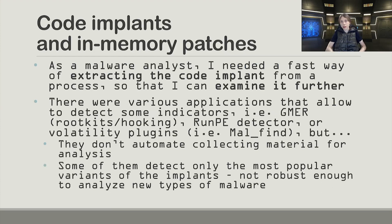As a malware analyst, I was most interested in those malicious implants. I needed a fast way of extracting code implants from a process so I could examine them further. There were various applications that allow detecting some indicators — for example, GMER detects rootkits and hooking, and there is also an app named PE Detector which detects RunPE, also known as process hollowing. There are also volatility plugins that work on memory dumps. But still, they were not the best fit to my workflow.